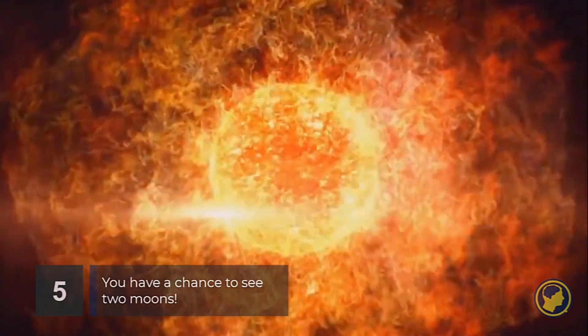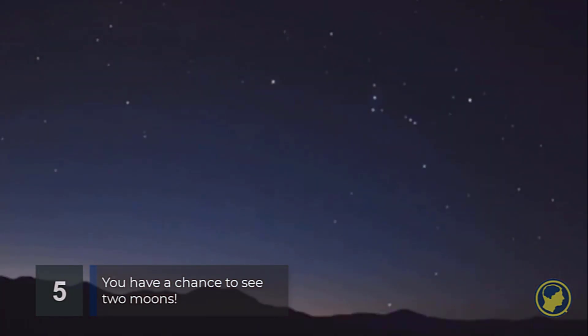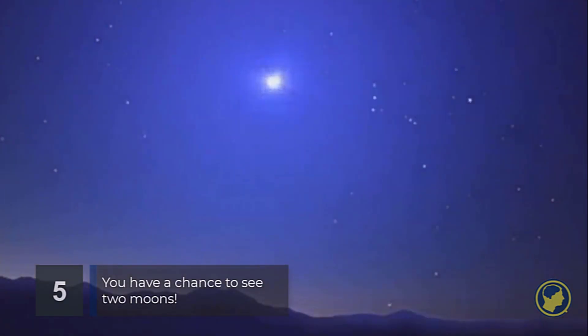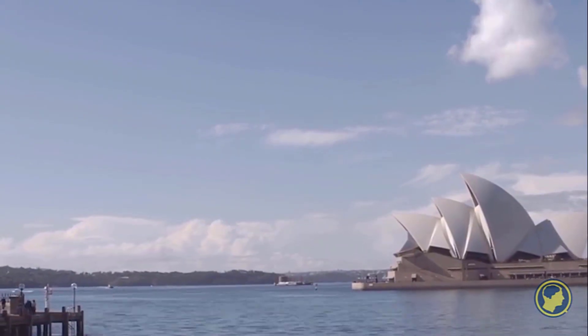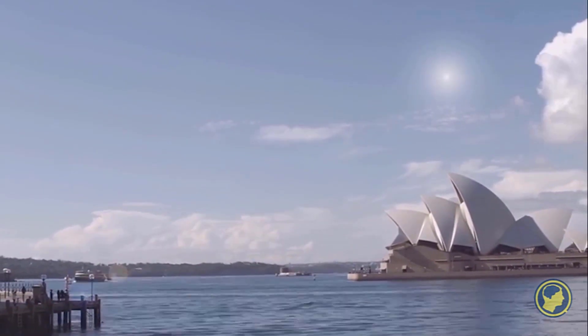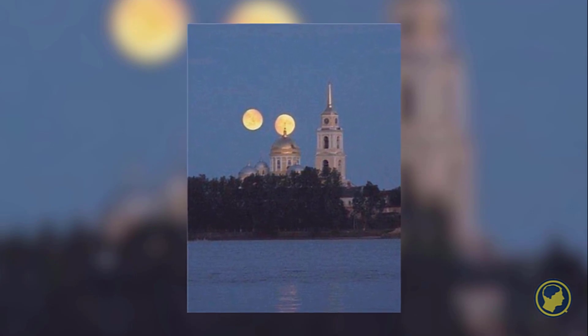When Betelgeuse finally goes supernova, it will present all of us here on Earth with a truly spectacular sight. Its lights will appear as bright as the full moon and will be visible even in daylight for several weeks. This will give us the impression of seeing two moons in the sky.